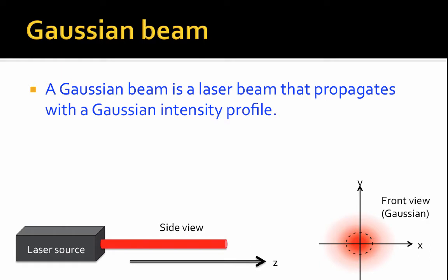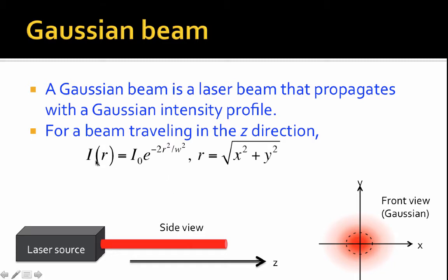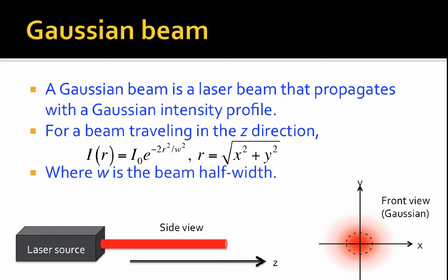A Gaussian beam is a laser beam that propagates with a Gaussian intensity profile. A Gaussian is a mathematical function. The intensity profile looks like bright red in the center — more intensity in the center and less on the outside. If a beam is traveling in the z-direction, the intensity goes as I of r equals I0, the maximum intensity, times e to the minus 2r squared over w squared, where r is the square root of x squared plus y squared. The parameter w is the beam half width — the radius at which the beam intensity goes to 1 over e squared. The electric field goes as 1 over e at the beam half width.